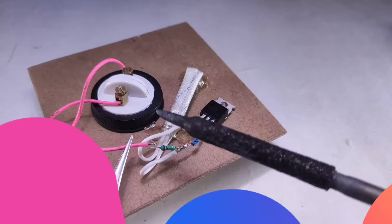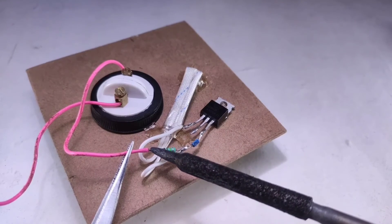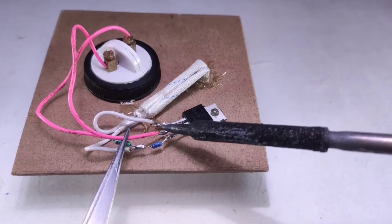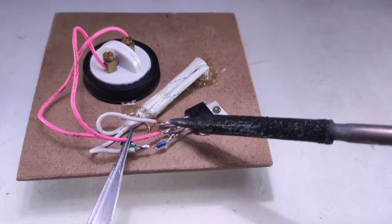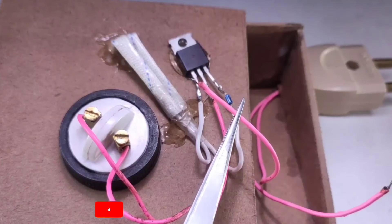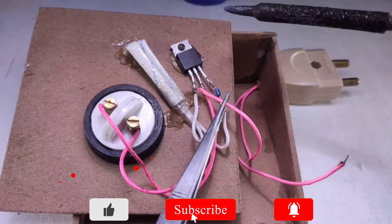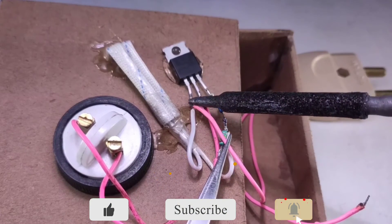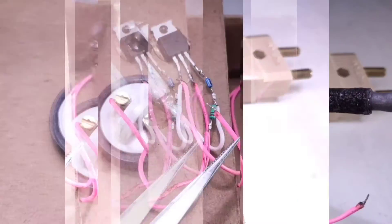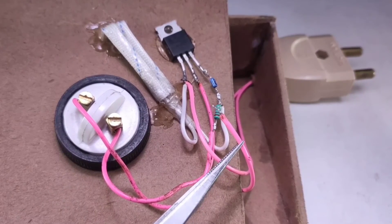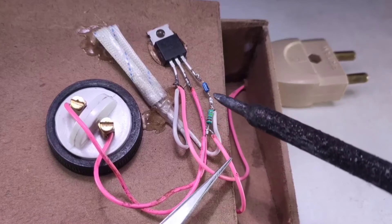Then I solder one of the wires from the holder in this way, then solder another wire of the holder to Terminal 2 of the BT-136 triac. Now we will solder one of the two wires coming from the 2-pin plug to Terminal 1 of the BT-136 triac, then I will solder another wire coming from the 2-pin plug like this.